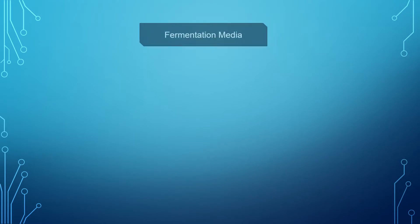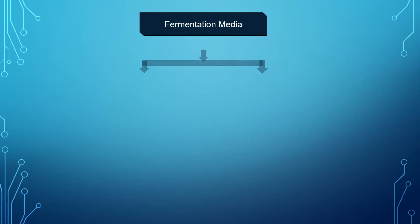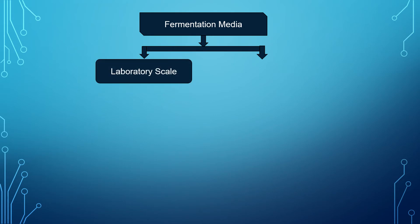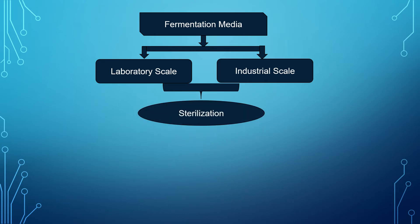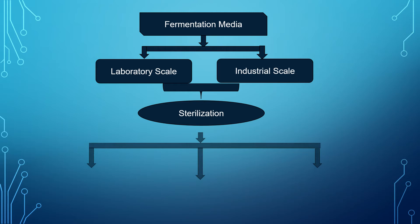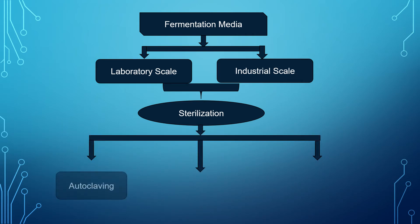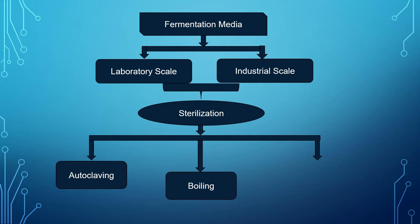Fermentation media is used on two scales: laboratory scale and industrial scale. Sterilization of fermentation media is very important, and this sterilization is carried out basically in three ways. First is autoclaving. Second is boiling. And third one is passing steam. These are the methods generally used in sterilization of fermentation media.